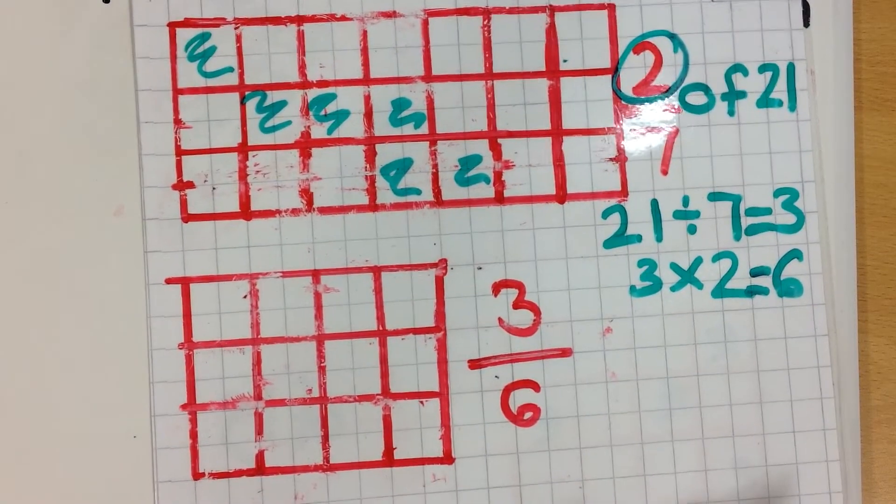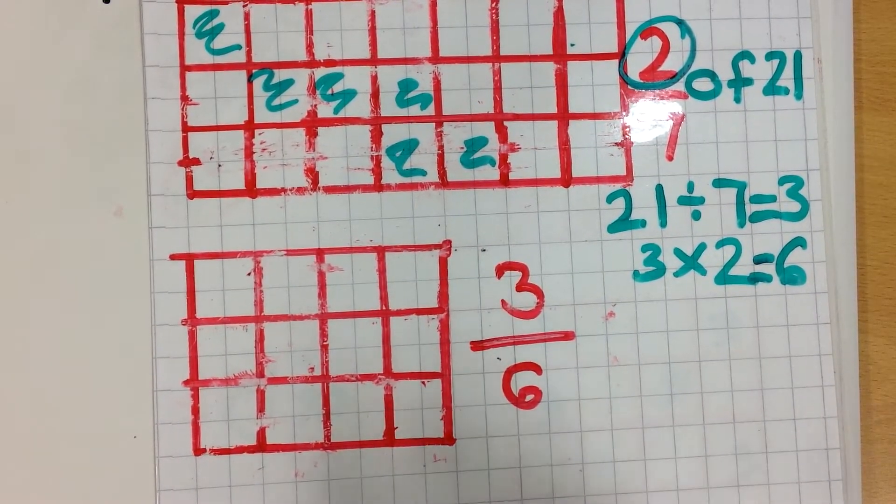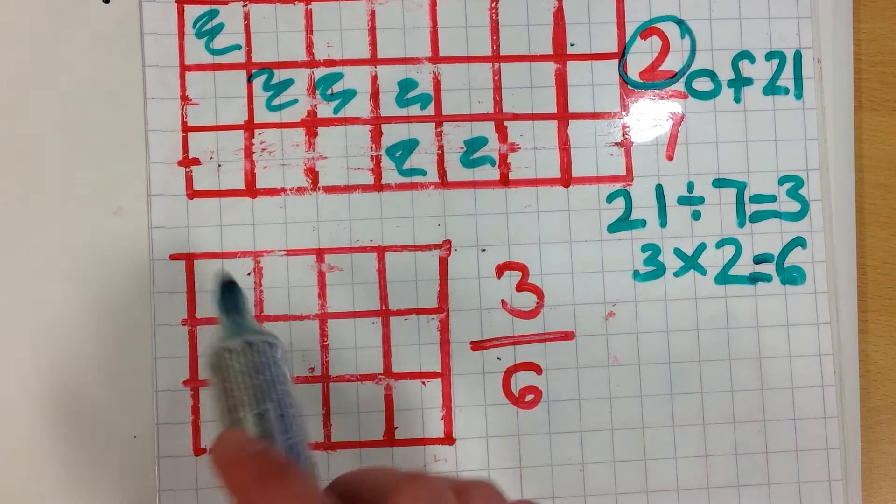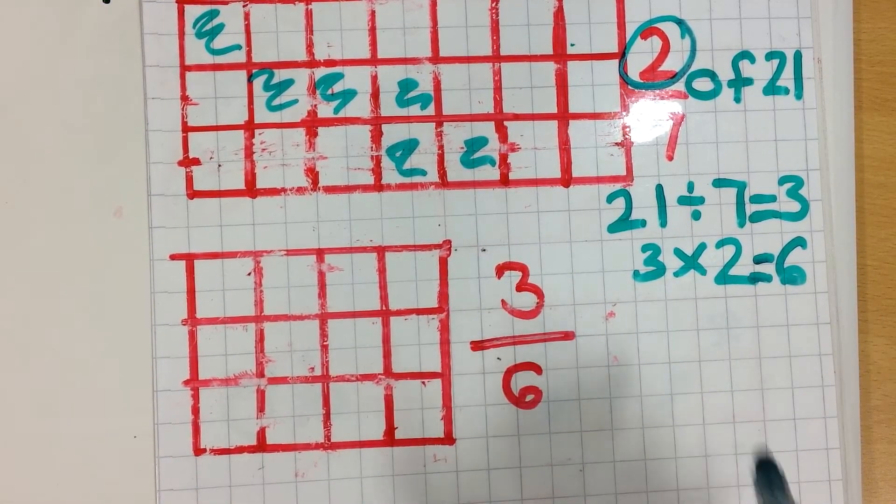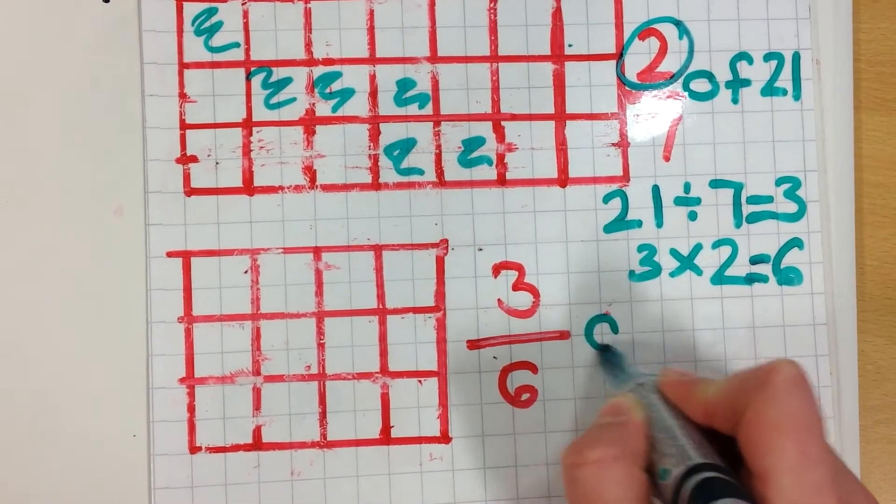So here is the other question. So you count the squares again. 1, 2, 3, 4. By 3, which is 12. So you do 3 sixths of 12.